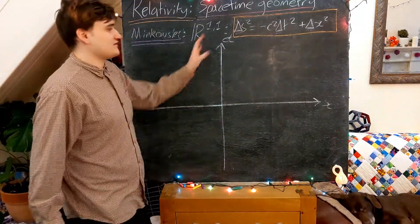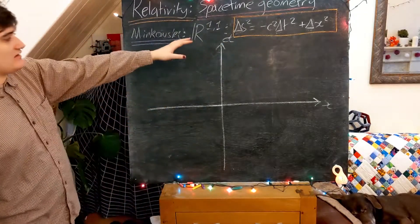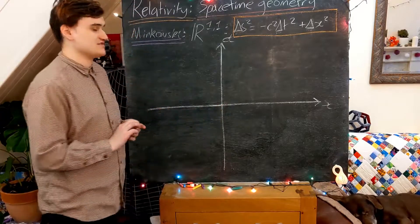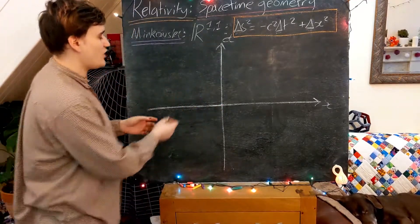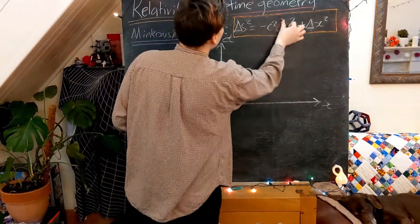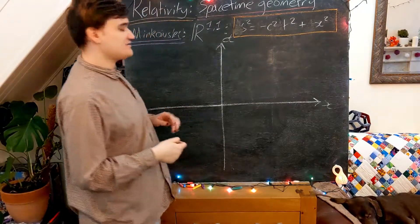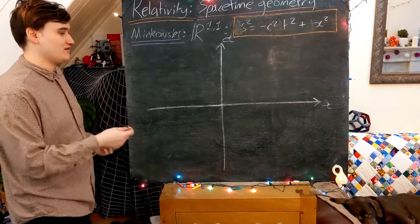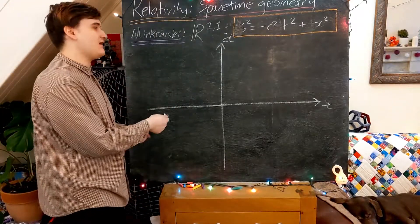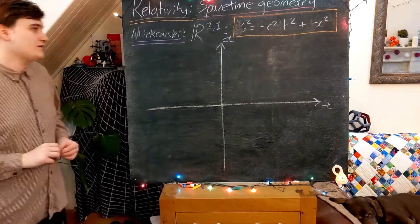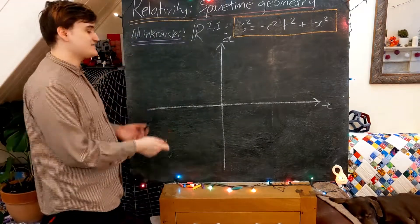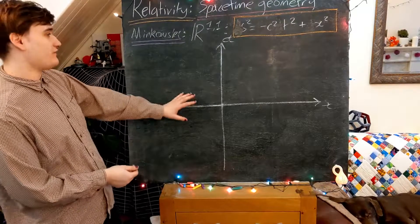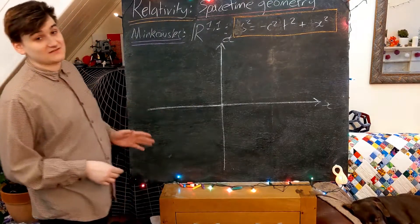By considering the interval from the origin, I can effectively remove the interval symbol because the value of the interval just becomes the value of the coordinate. So we have a similar equation as in the Euclidean picture, where we can now study the level curves of this function — these represent all the points in Minkowski space that are at a constant separation from the origin. In the Euclidean picture, all points at constant separation from the origin lie on a circle. But now let's see what the Minkowski geometry looks like in comparison.